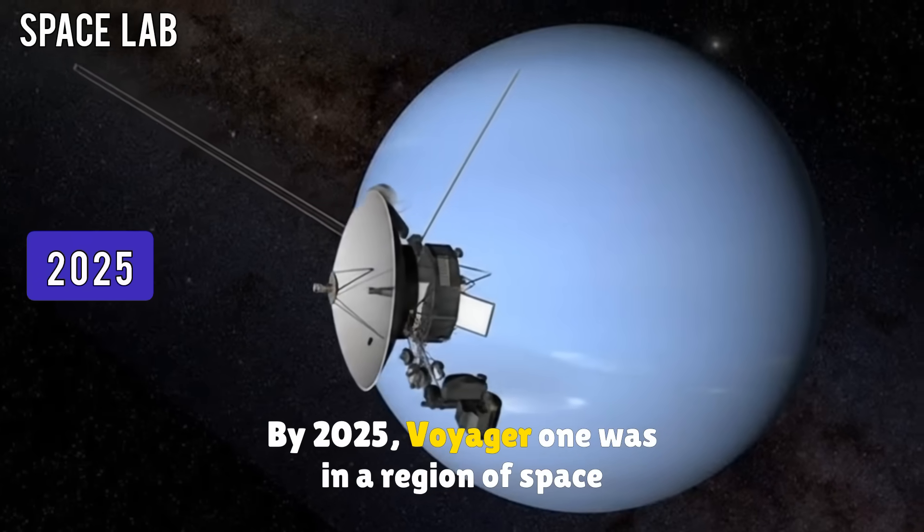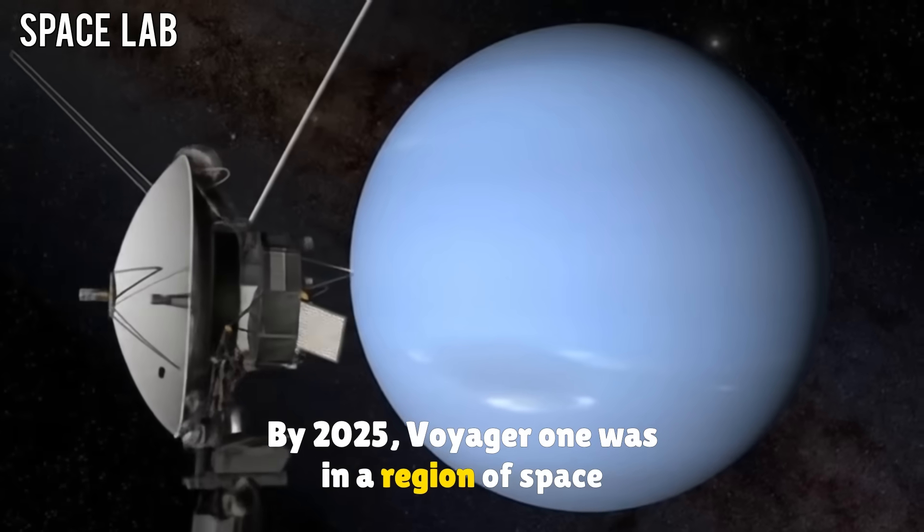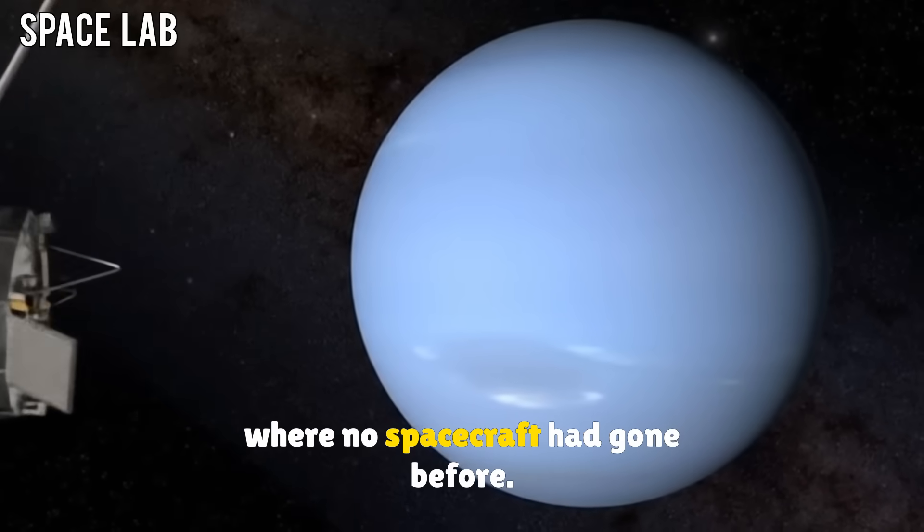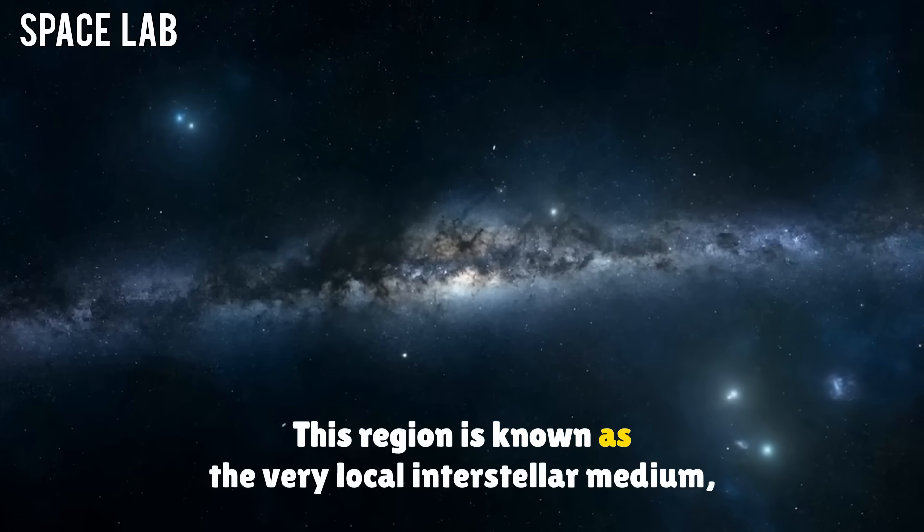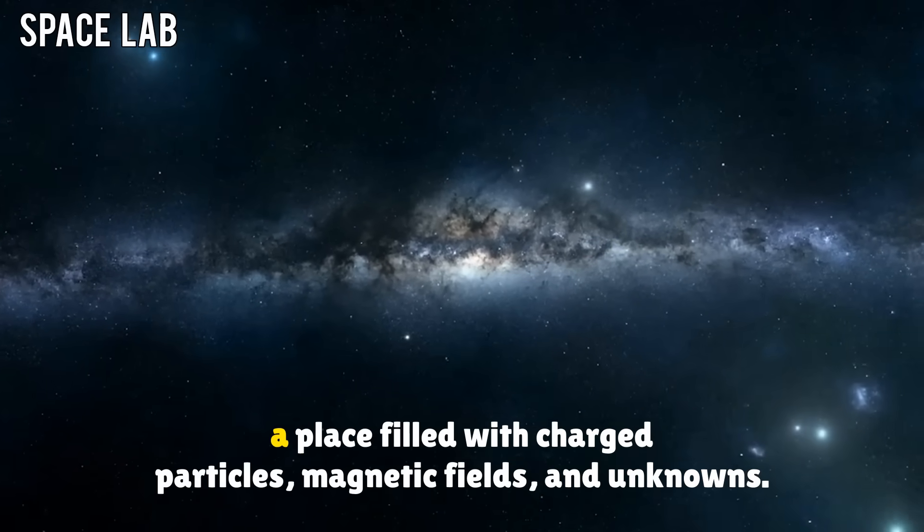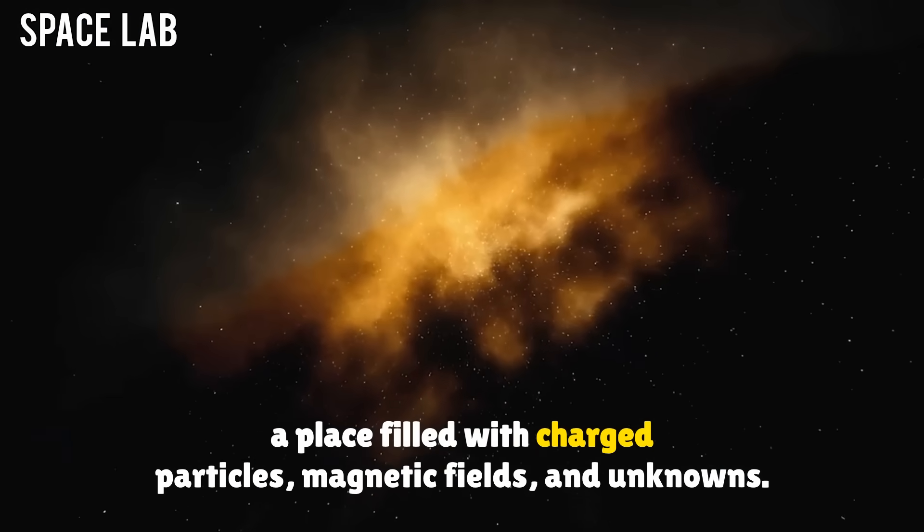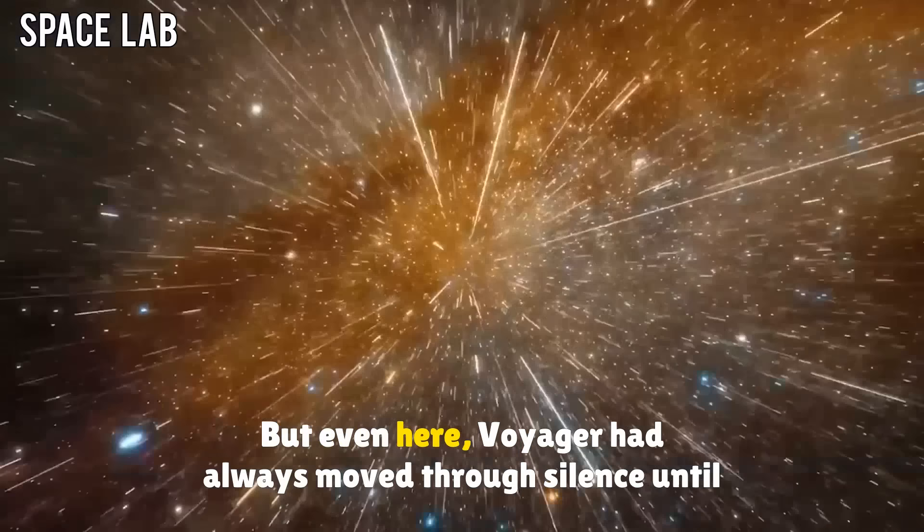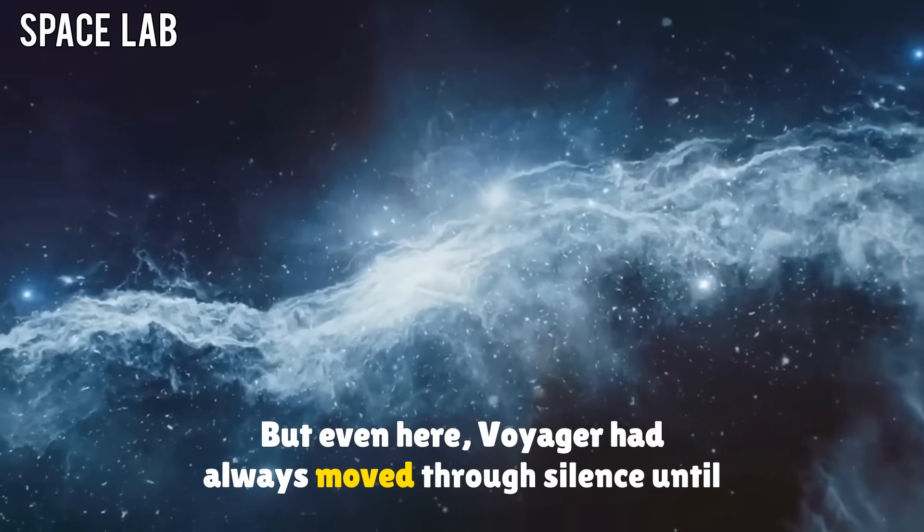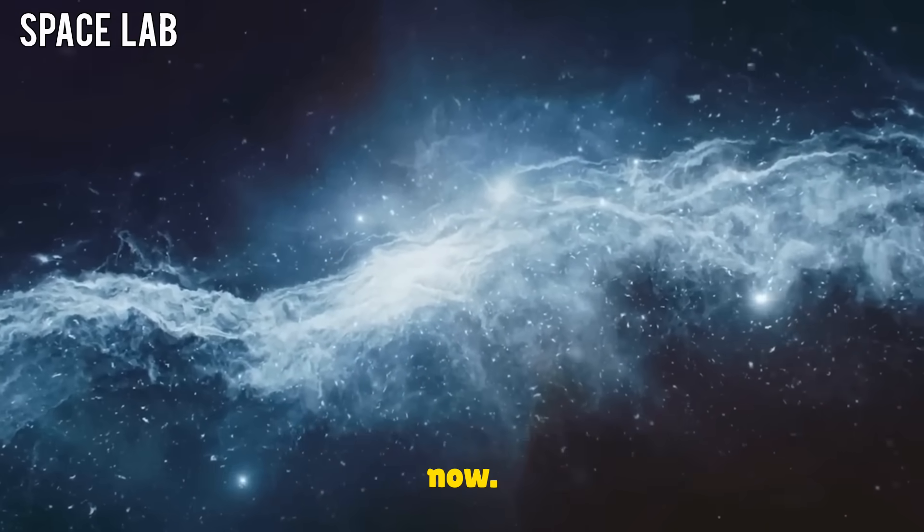Voyager 1 had stumbled upon something or someone in the endless dark of space. By 2025, Voyager 1 was in a region of space where no spacecraft had gone before. This region is known as the very local interstellar medium, a place filled with charged particles, magnetic fields, and unknowns. But even here, Voyager had always moved through silence. Until now.